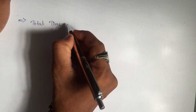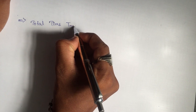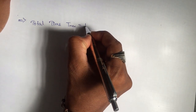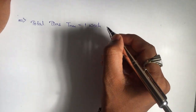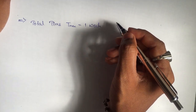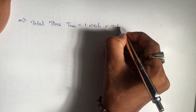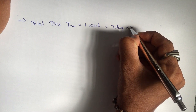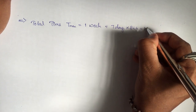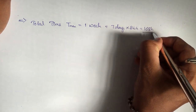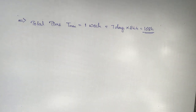In the problem they had mentioned 'for one week,' which means the total time T_max is equal to one week. For one week we have seven days, and each day consists of 24 hours, which means a total duration of 168 hours.